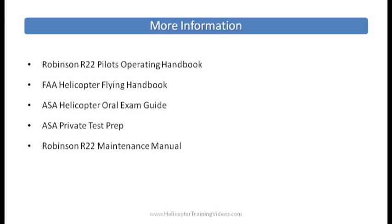For more information, check out the Robinson R22 or R44 POH, Pilot Operating Handbook. The FAA also produces the Helicopter Flying Handbook, which you can download from their website. ASA produces a helicopter oral exam guide and a private test prep, both of which will cover systems questions to help you prepare for your private checkride or written test. There's also the Robinson R22 or R44 maintenance manual you can download from Robinson.